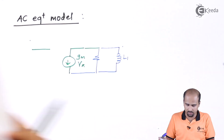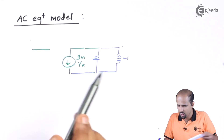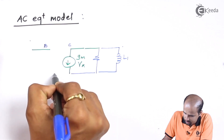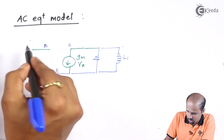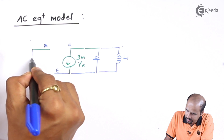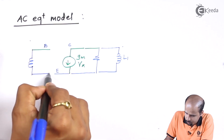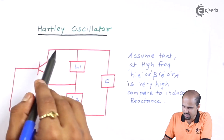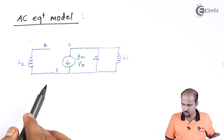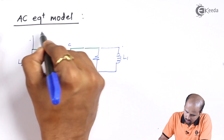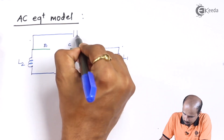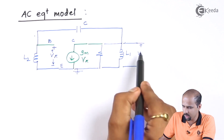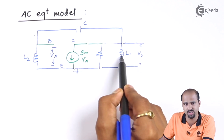L2 is in between the base and the emitter. Here this is the base, here is the collector, and here we have the emitter. So in between emitter and base I have another inductor L2. C is placed in between collector and the base. We are getting the output voltage across L1.